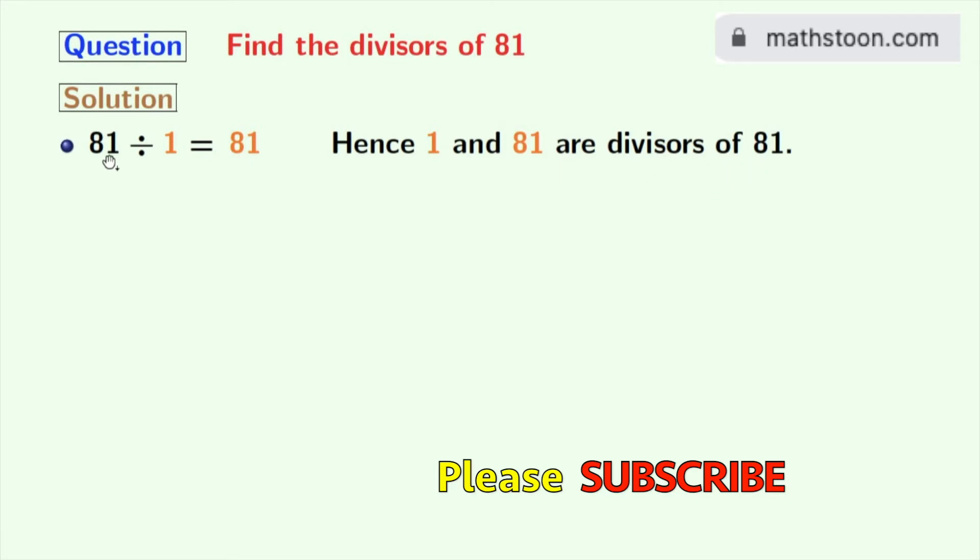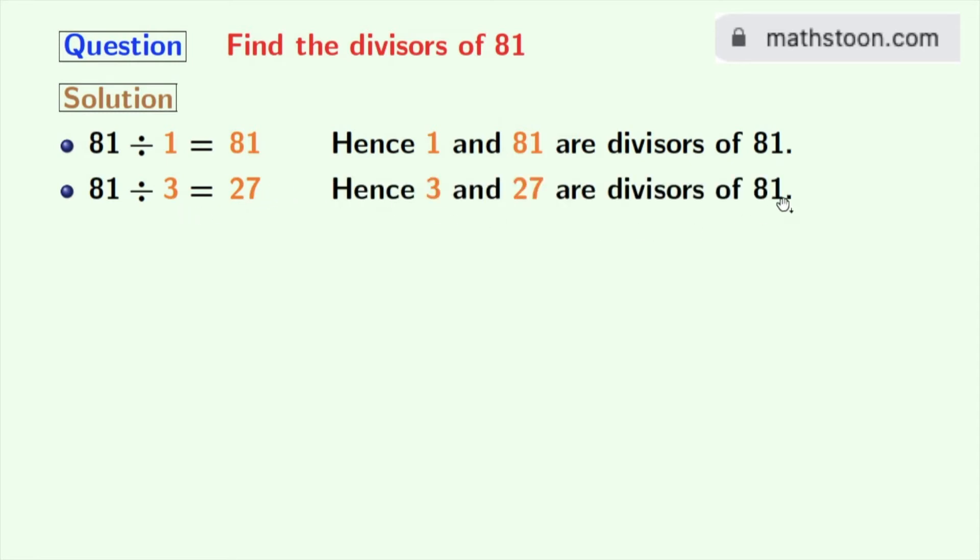Next number 2 does not divide 81 as this is an odd number. So we will try for 3 and say that 81 divided by 3 gives 27. Hence 3 and 27 are the divisors of 81.